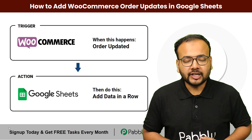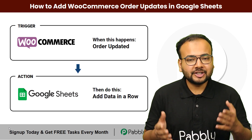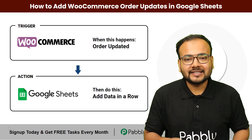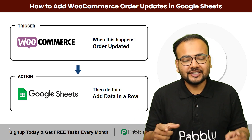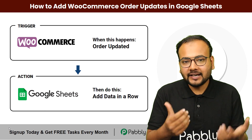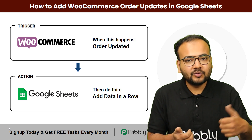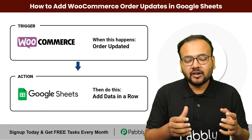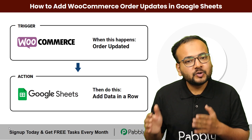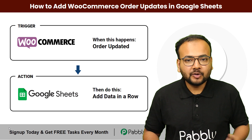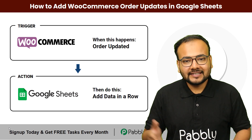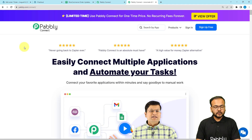This kills their energy, so here I'm going to show you an automation technique which is going to do this task automatically for you. I'm going to integrate WooCommerce with Google Sheets in such a way that whenever there is an update of an order inside the WooCommerce store, the data of that order update will be saved in Google Sheet rows automatically — and we are going to set up this whole automation without any coding.